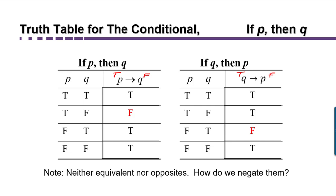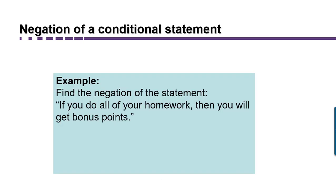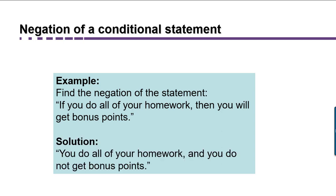So what we're going to do right now is try to figure out how we can negate the conditional — how can we get a statement that has truth values false, true, false, false as its last column. Consider this statement: if you do all of your homework, then you'll get bonus points. Under what circumstances is that false? Well, it's false if you do all your homework and yet you don't get bonus points. So the negation of 'if you do all your homework, then you will get bonus points' is 'you do all your homework and you do not get bonus points.'